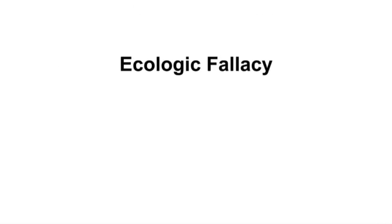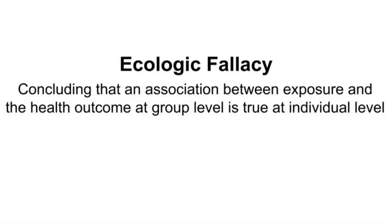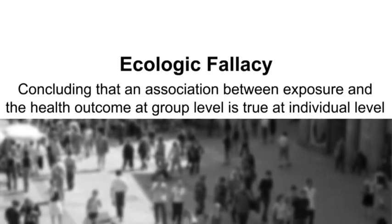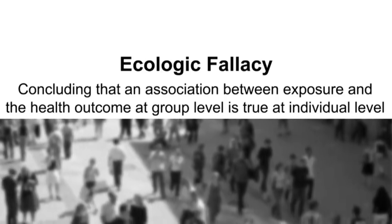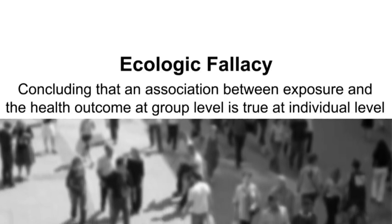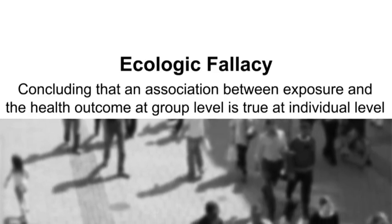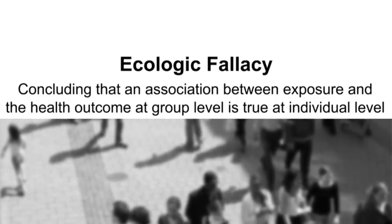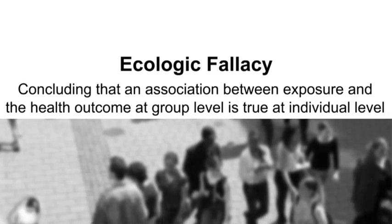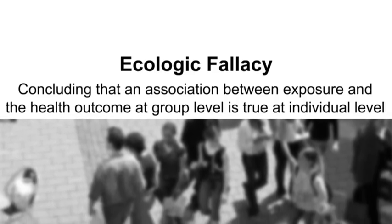This leads us to the ecologic fallacy — the major limitation of an ecologic study design. An ecologic fallacy is concluding that an association between the exposure and the health outcome at a group level is true at an individual level, when this may not be true. The reason for this fallacy is that we do not know the link between exposure and the health outcome among individuals within each group — i.e., we don't know the number of diseased persons who were exposed or non-exposed in the high or low exposure group. What we find at a group level may not hold true at an individual level.